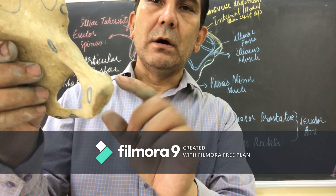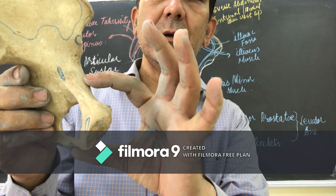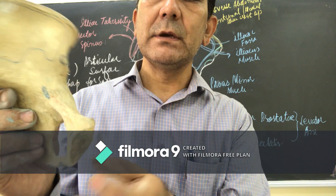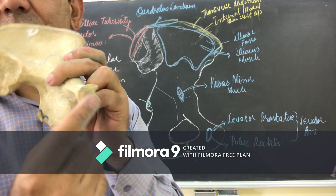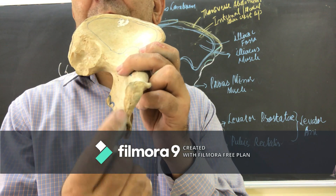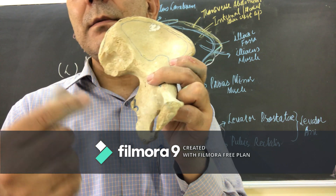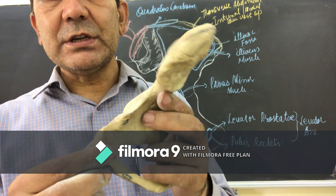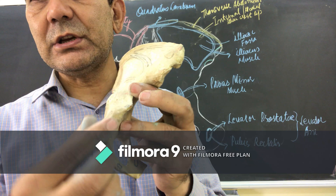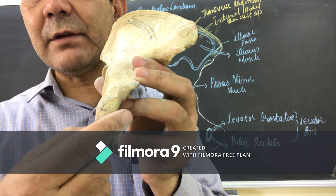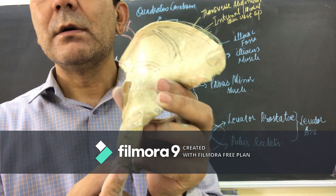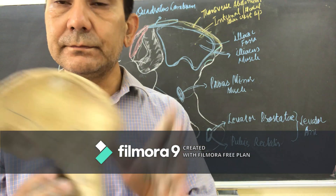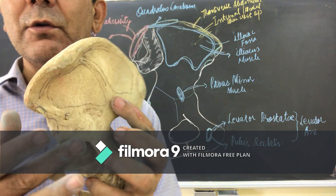The pubis bone has three parts: the superior ramus, body, and inferior ramus. The articular surface on the body of the pubis forms the pubic symphysis joint. The ischial tuberosity on the posterior side has two ridges: a transverse ridge and a longitudinal ridge. This concludes the external and lateral portion of the innominate bone.